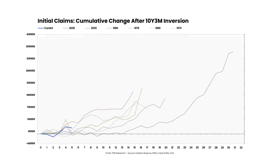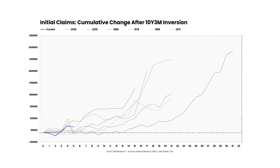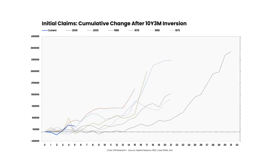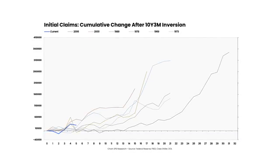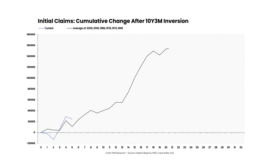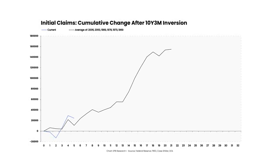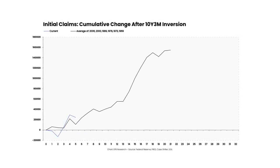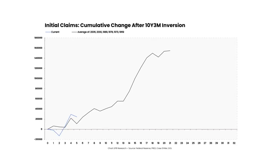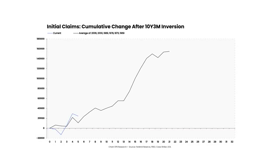After the 10-year 3-month curve inverts, it's just a matter of time before the labor market cracks and initial jobless claims explode higher. The same difficulty arises, however, when trying to narrow the distribution of outcomes down to the perfect monthly prediction. On average, the rise in initial jobless claims today is on par with the average trajectory post-10-year 3-month yield curve inversion. But just like the stock market example, there is the 1974 case and the 2008 case, which took two totally different paths to end up with roughly the same outcome.